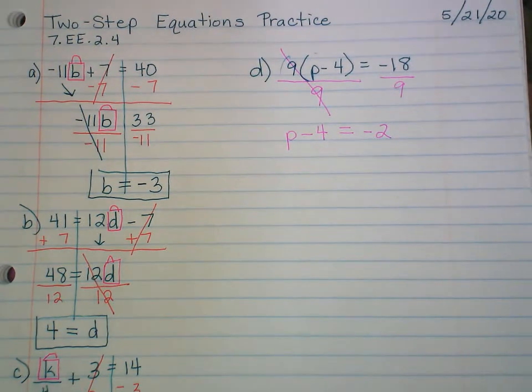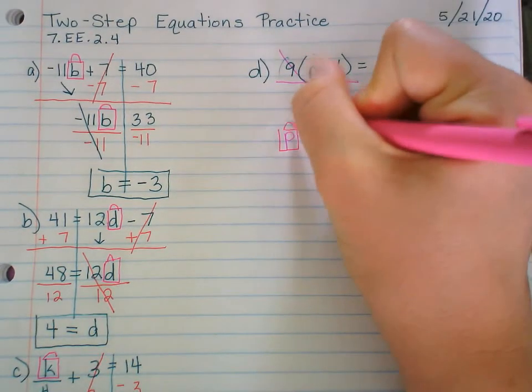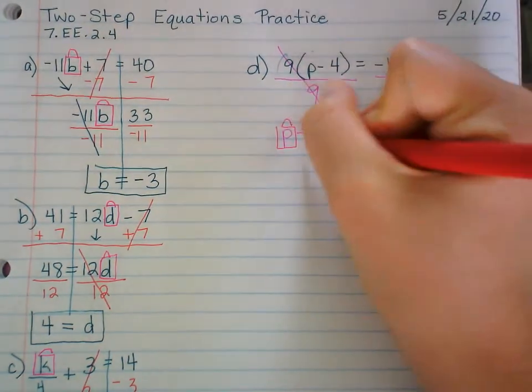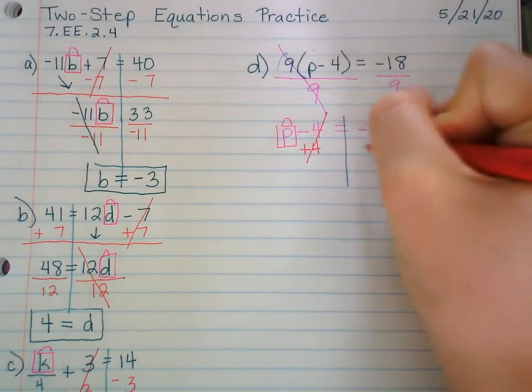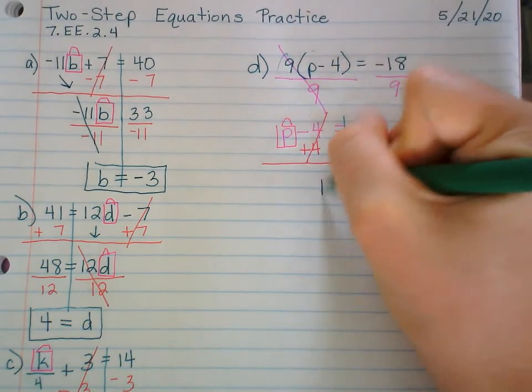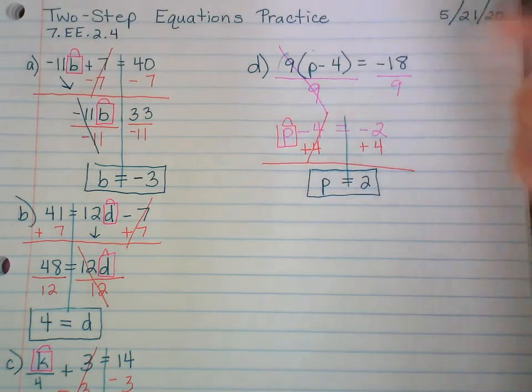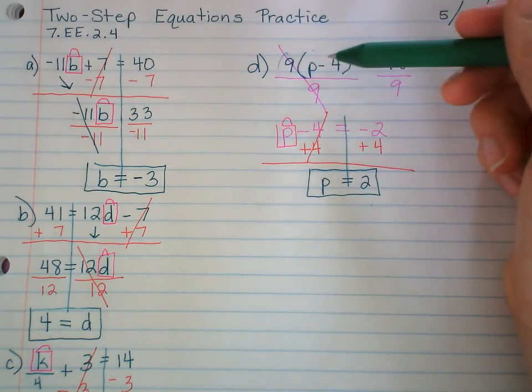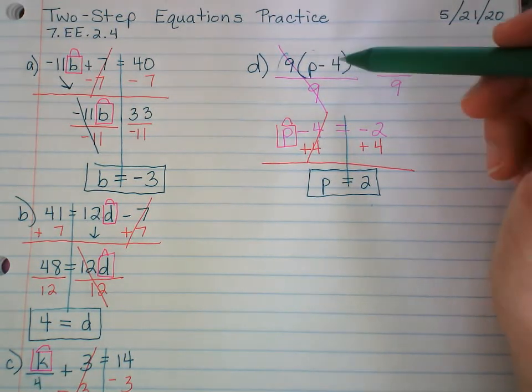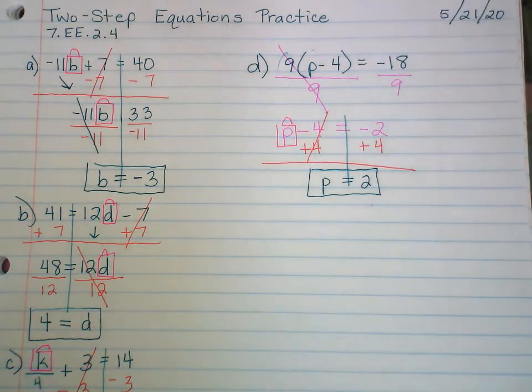Box up the variable, draw the line. Combine like terms. Let's get this -4 over there. So we add 4 to both sides. Well, that cancels out, so that just leaves us with a p equals -2 plus 4 is a positive 2. Plug it in and check. Remember, PEMDAS says you have to do the parentheses first. So 2 - 4 is -2. So that's -2 in the parentheses. -2 times 9 equals -18. Yes.